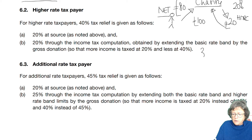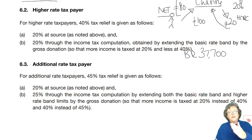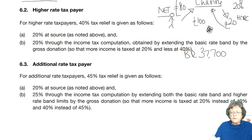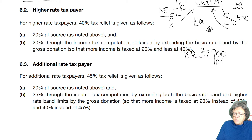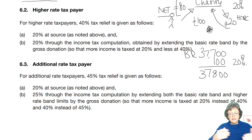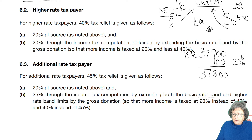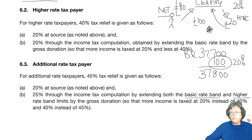For an individual, £37,700 is the basic rate band, so up to that figure you pay tax at 20%. If you make a £100 gross contribution to a charity, that gross contribution of £100 extends the basic rate band, giving you that extra 20% tax relief on that £100. For an additional rate taxpayer, you would extend both the basic rate band and the higher rate band by that £100.